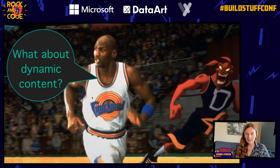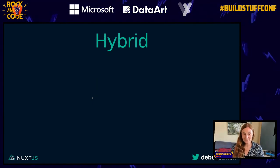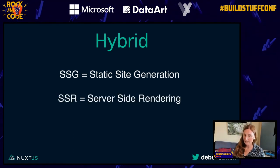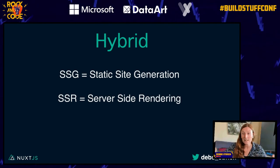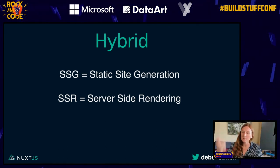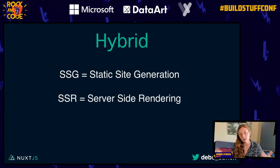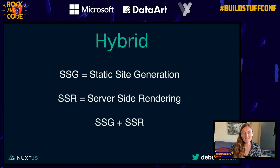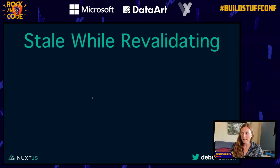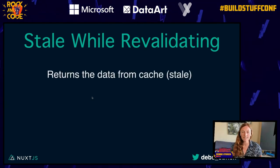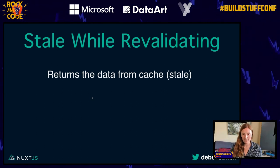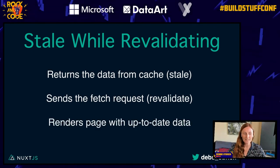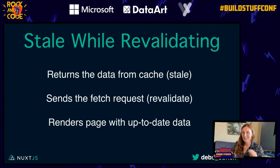What about dynamic content? Let's go hybrid. We have static site generation (SSG) and server-side rendering (SSR) — that's your dynamic data. If your data changes and you don't want to rebuild your application every time, you can combine SSR and SSG together. Stale-while-revalidating: it returns data from cache, then sends the fetch request and revalidates it, then renders the page with up-to-date data.